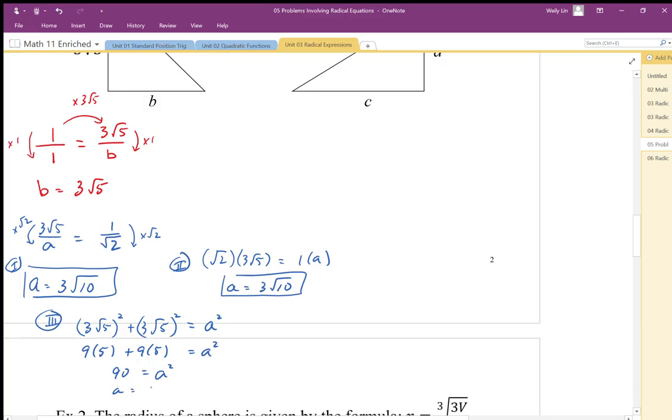A is equal to square root 90. We'll just use the principal square root since we are just using side length. So we'll get rid of the minus, and then simplify that into 3 root 10. So those are three different ways you could solve for that side A. And reminder that we want to keep these in exact values.